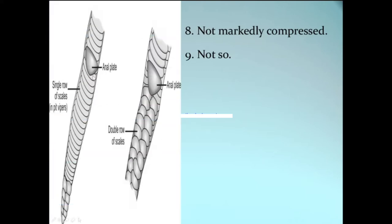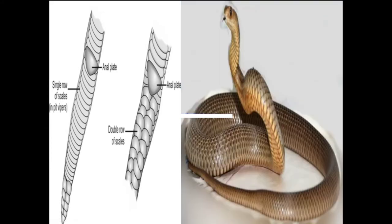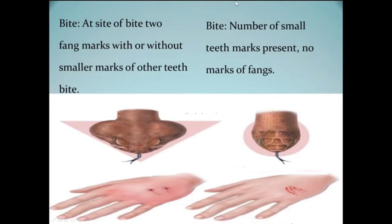The tail of poisonous snakes is compressed compared to non-poisonous snakes. Poisonous snakes mostly have nocturnal habits. Another feature is the anal plate: the scales following the anal plate in poisonous snakes are in a single row, whereas in non-poisonous snakes there is a double row. The bite site in poisonous snake cases will show two prominent fang marks, while non-poisonous snake bites show only a row of teeth marks.